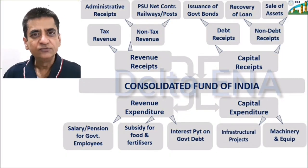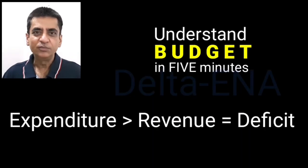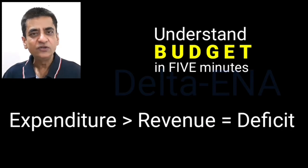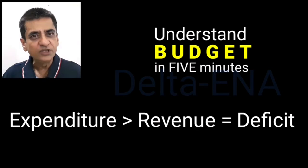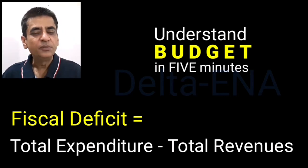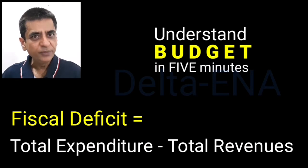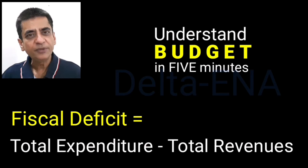This forms the total consolidated fund from where expenditure is made and various sources of receipts are added into it. Generally, there is always a deficit because in any budget, expenditure is always higher than expected receipts, particularly in developing nations. They like to invest more in infrastructure, hence crossing their total receipts. This deficit, which is created as a difference between budgeted expenditure and budgeted total receipts, is known as fiscal deficit. For developing countries, if the fiscal deficit is focused on capital expenditure, it should not be considered as negative.